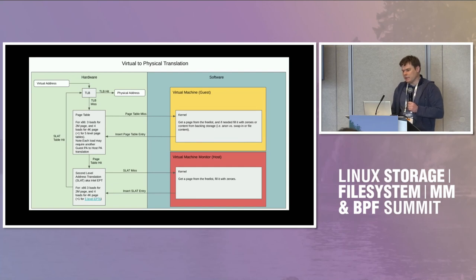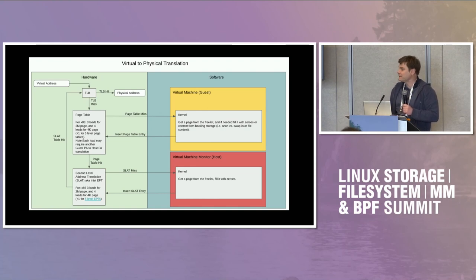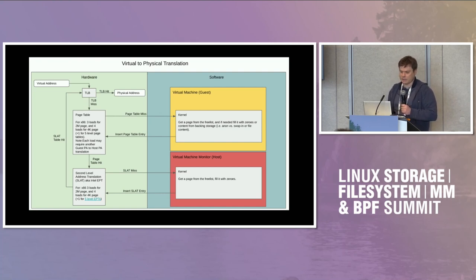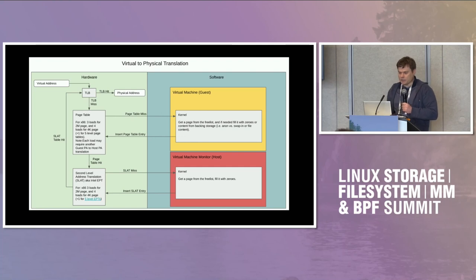I'll begin with a brief explanation of how extended page table works — also called SLAT or stage-two page table. It seems every vendor decided on their own name for this. When we translate a virtual address, we look up in the TLB, and if we hit, we get a physical address. In a virtual machine, if we hit the TLB, the translation is exactly the same as running natively. But if you have to go through the second-level page table — through two-dimensional paging as we call it in the Linux kernel — the picture is more complicated, because we can have a page table miss both in the virtual machine page table and also in the second-level page table.